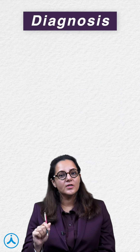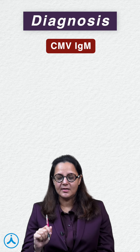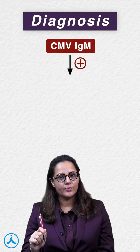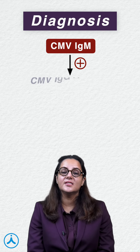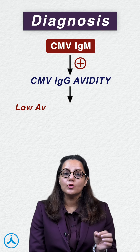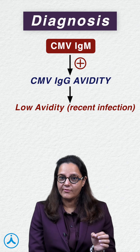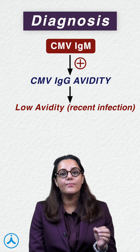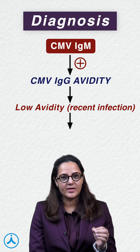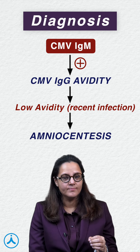Now let's come to the diagnosis. First, we will get CMV IgM done. If it comes out to be positive, we'll go with CMV IgG avidity. If it is low avidity, denoting that it's a recent infection, we will check for presence of infection in the fetus by amniocentesis.